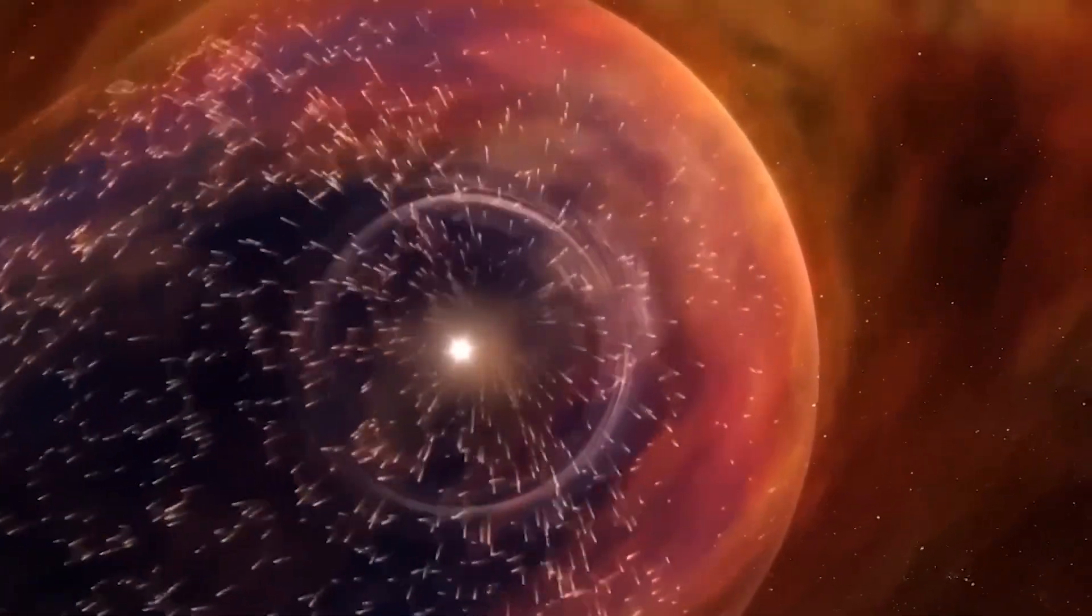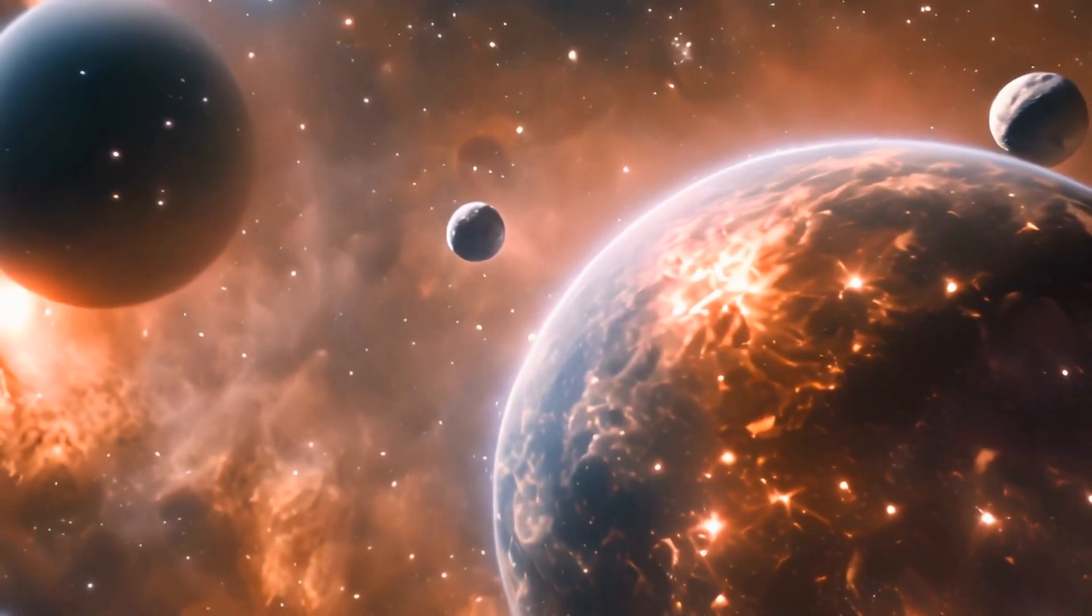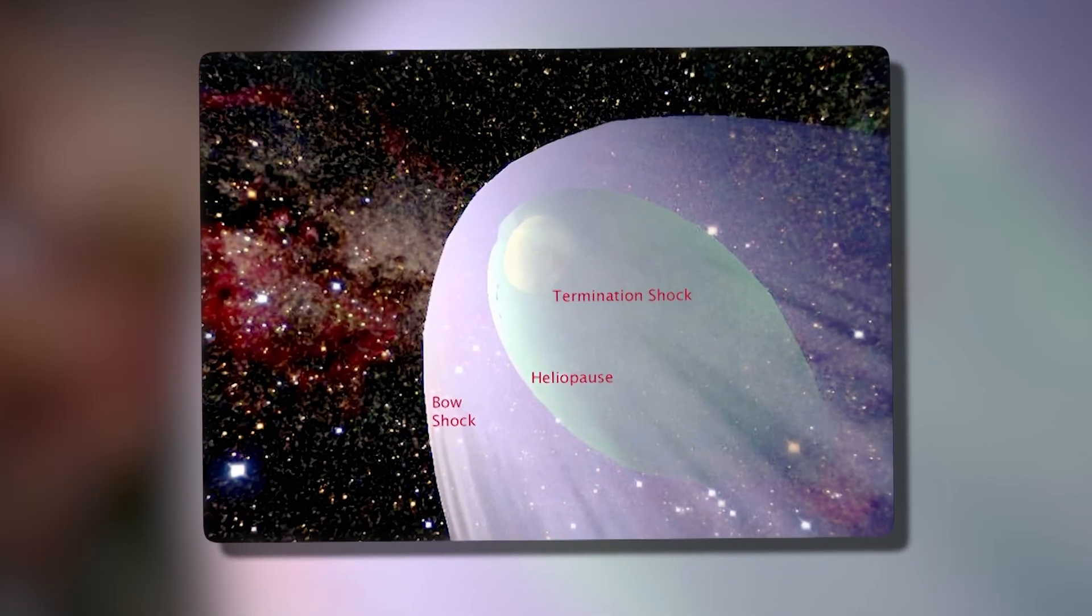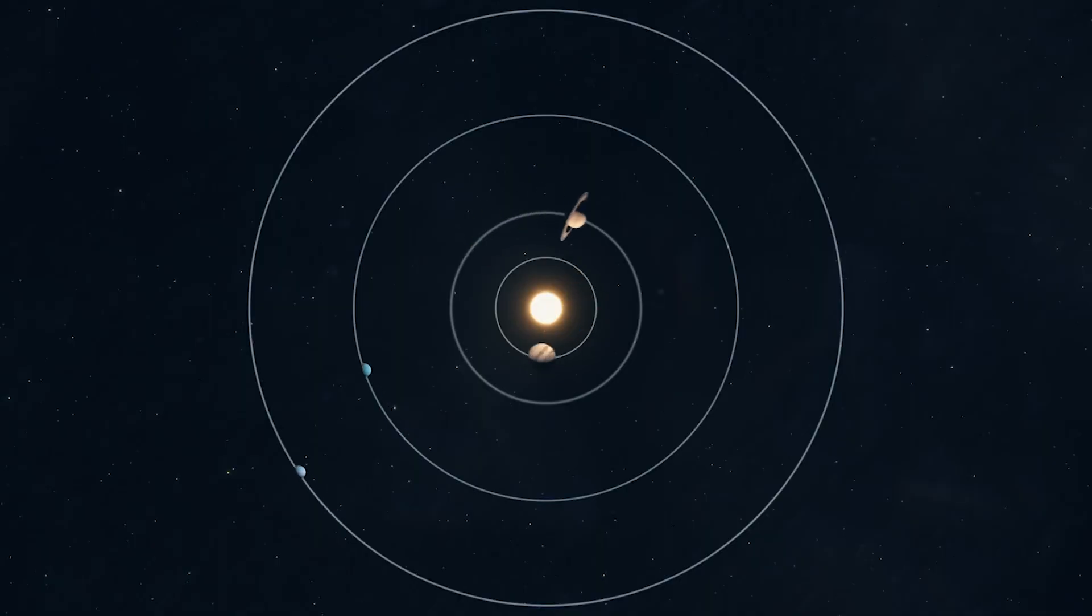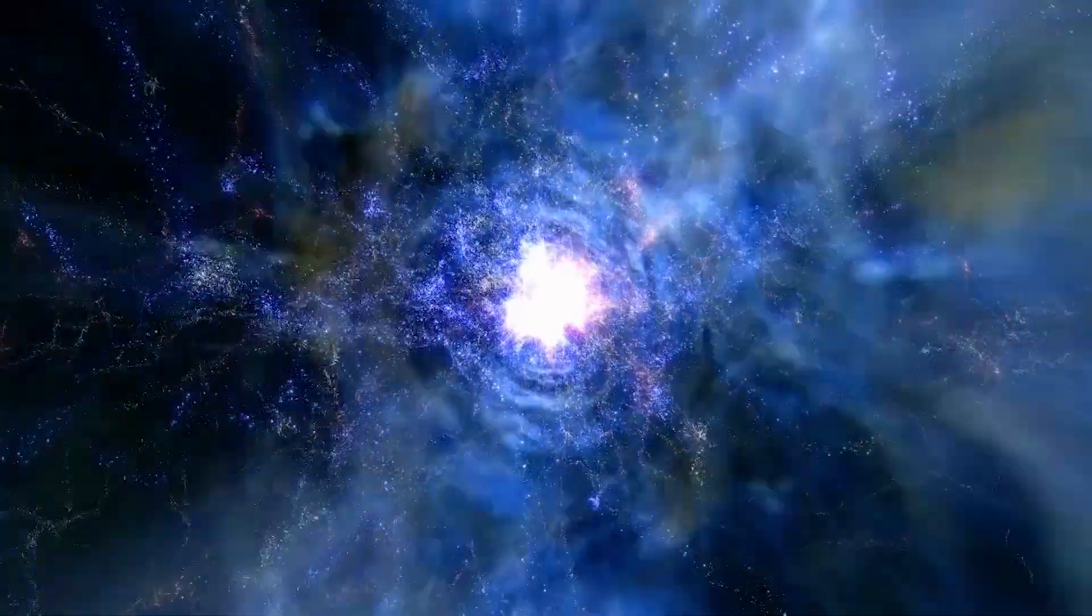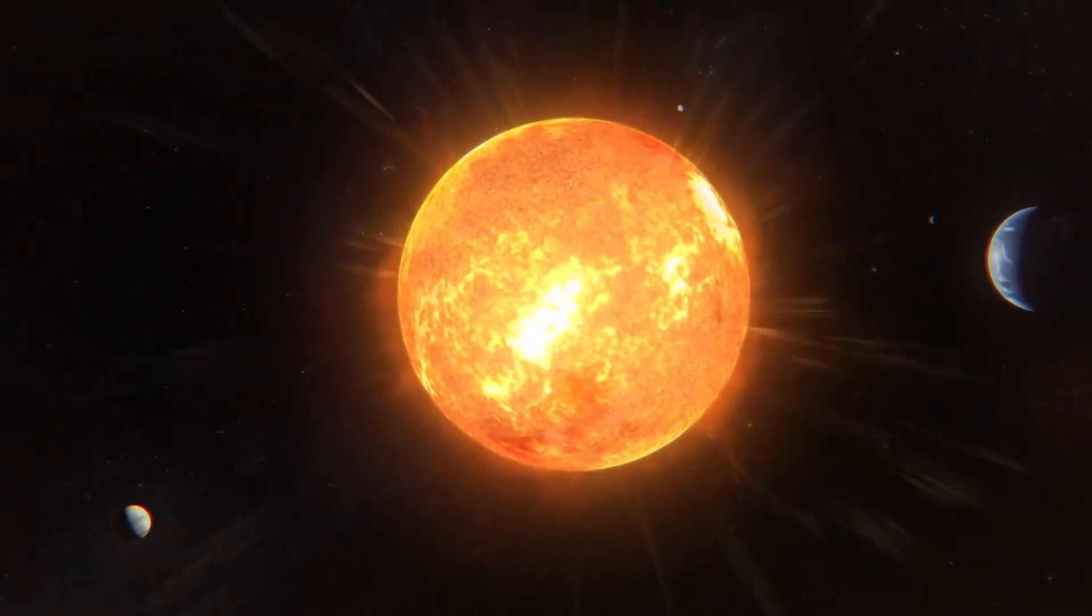This reshapes how we must think about the solar system's borders. For a long time, the heliosphere was imagined as a protective bubble, shielding our planetary system from the harshest elements of galactic space. The heliopause was thought to be the outer skin of this bubble, cleanly separating the solar wind from the interstellar medium. But Voyager 2's observations suggest a far messier transition, a kind of interstellar surf zone, where two colossal forces, solar and galactic, collide in ways that are neither stable nor passive.